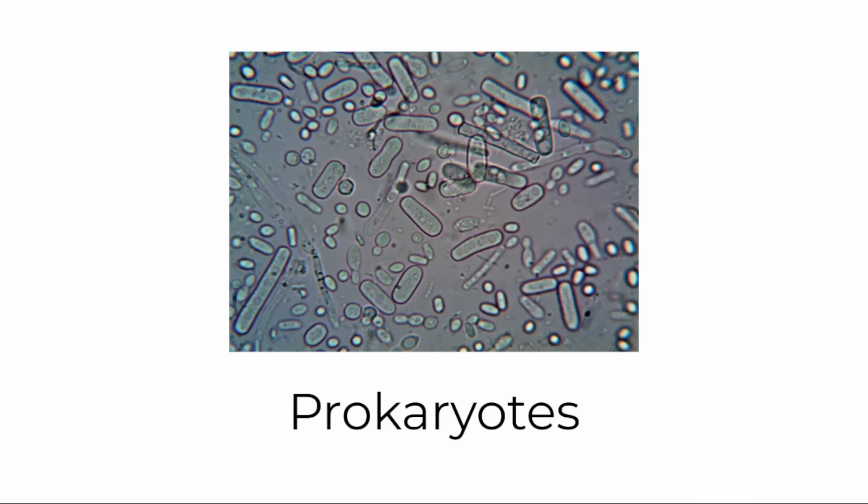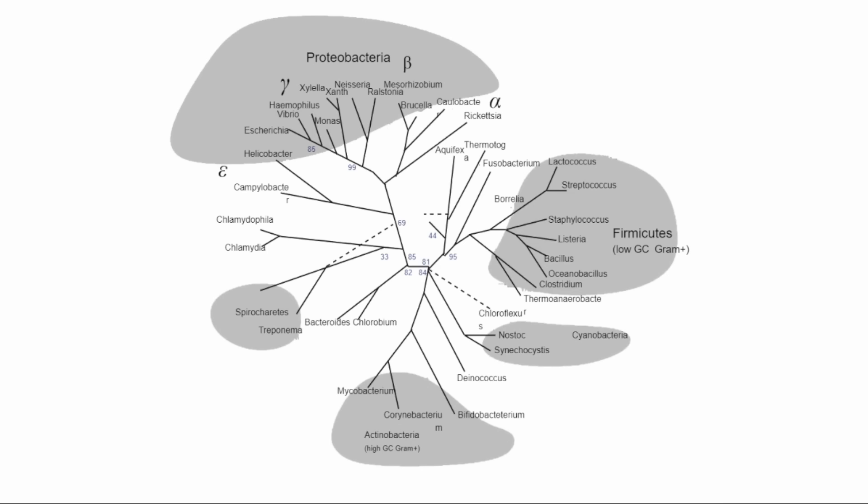Prokaryotic organisms, also called prokaryotes, are microbial lifeforms which do not have a nucleus. They're the most common form of life on Earth, and easily outnumber all other life in terms of individuals.